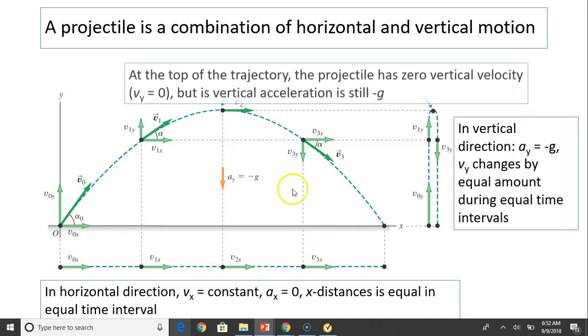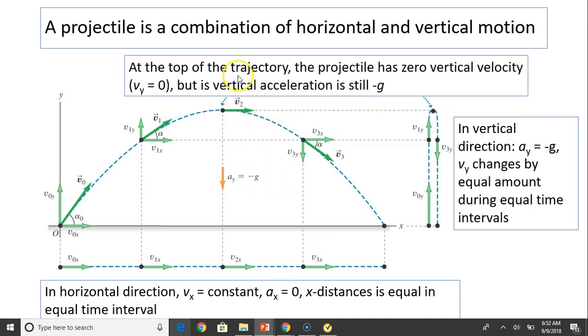At the very top of the trajectory, the projectile has zero vertical velocity, but acceleration is the same. It's still negative g. At each point, the projectile is a combination of horizontal and vertical motion.